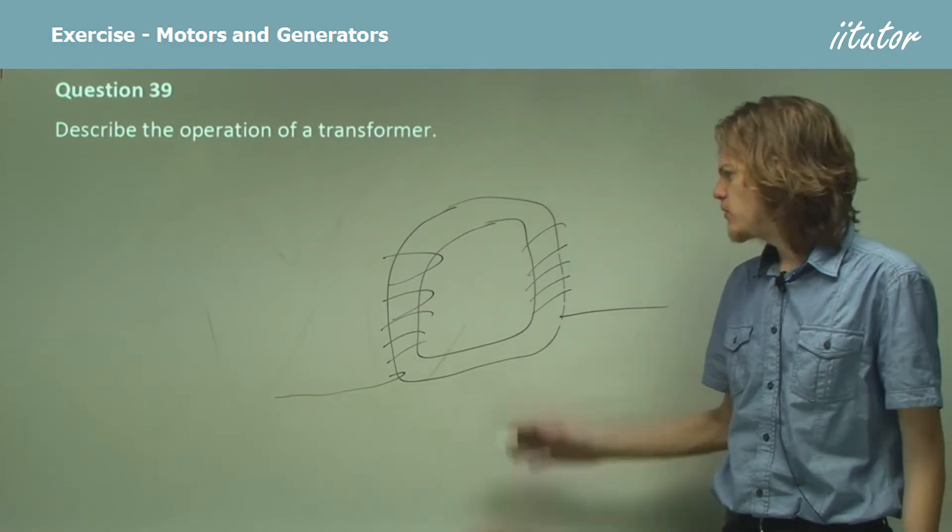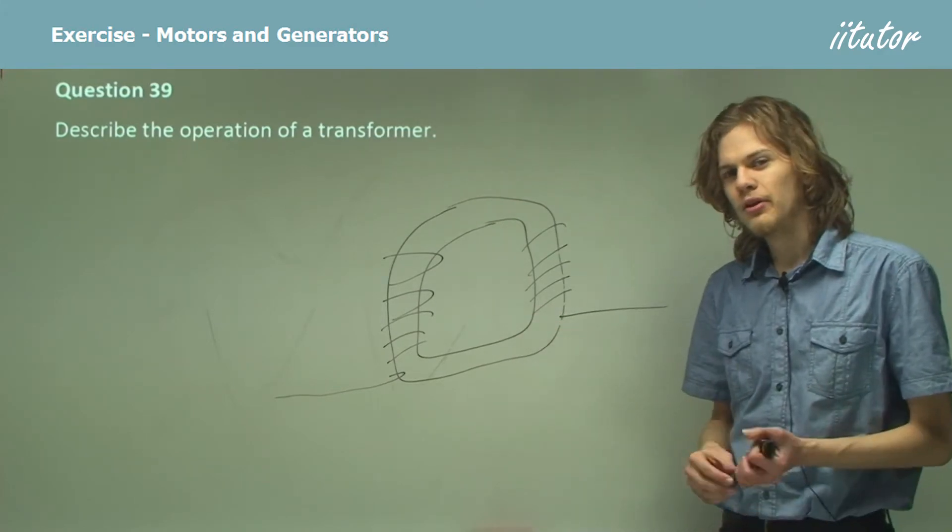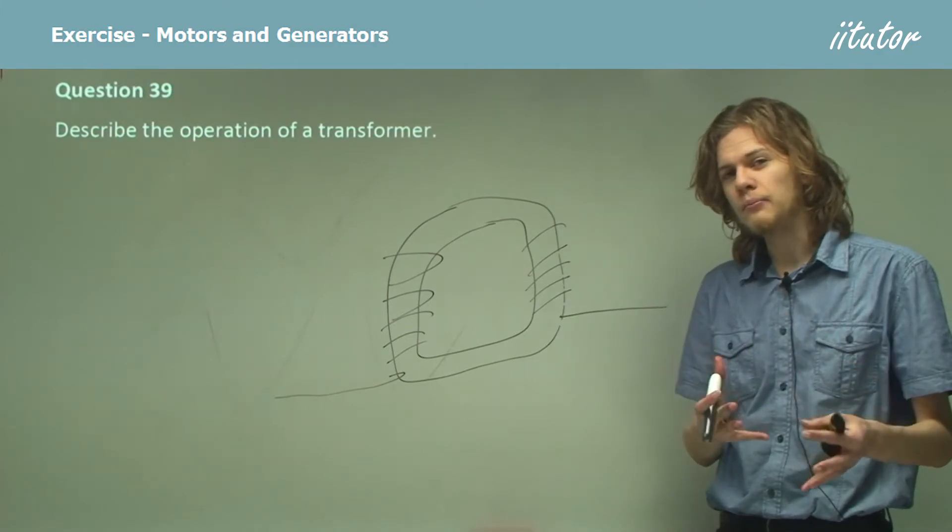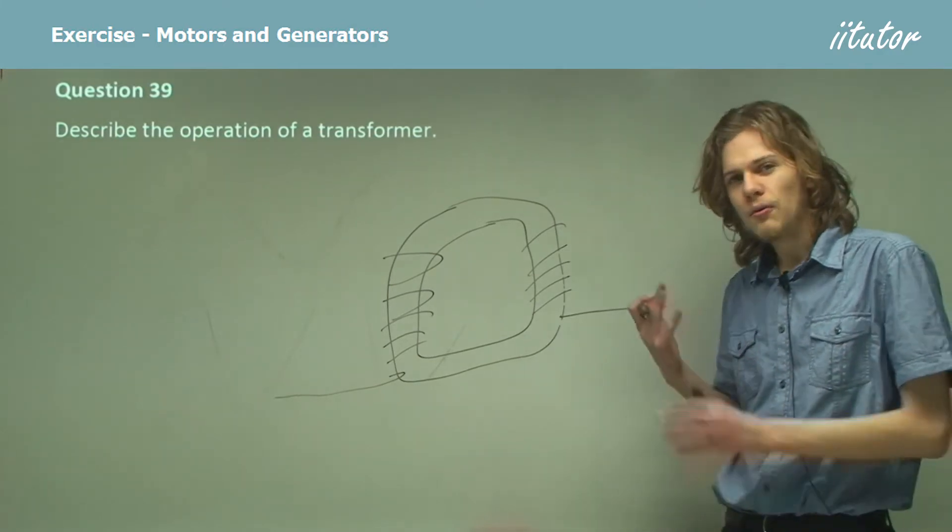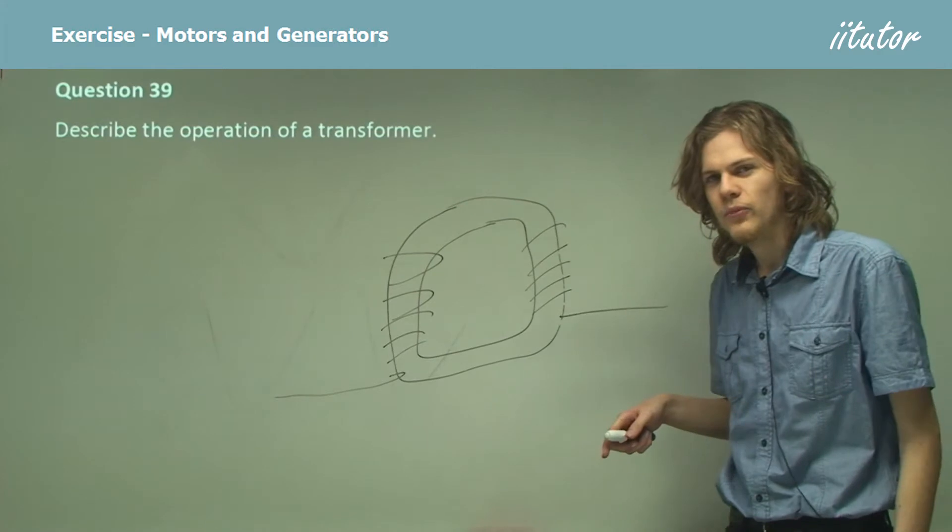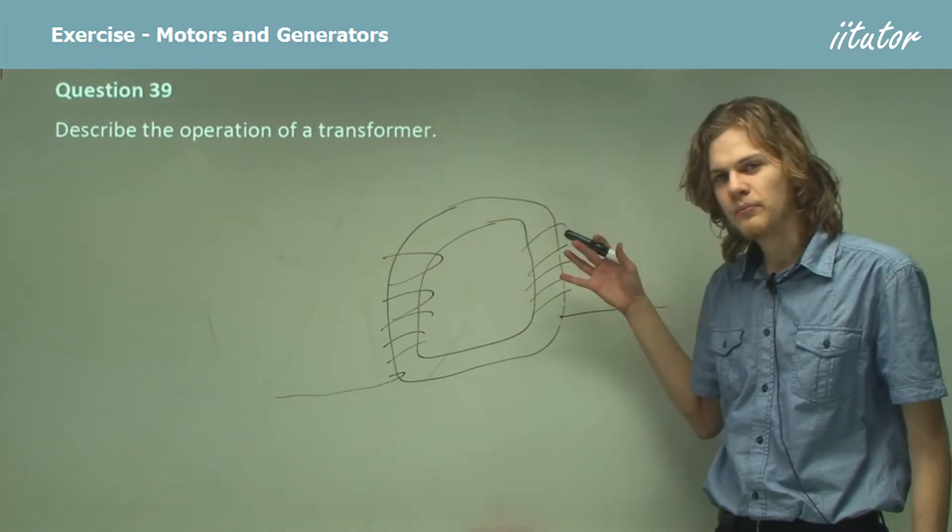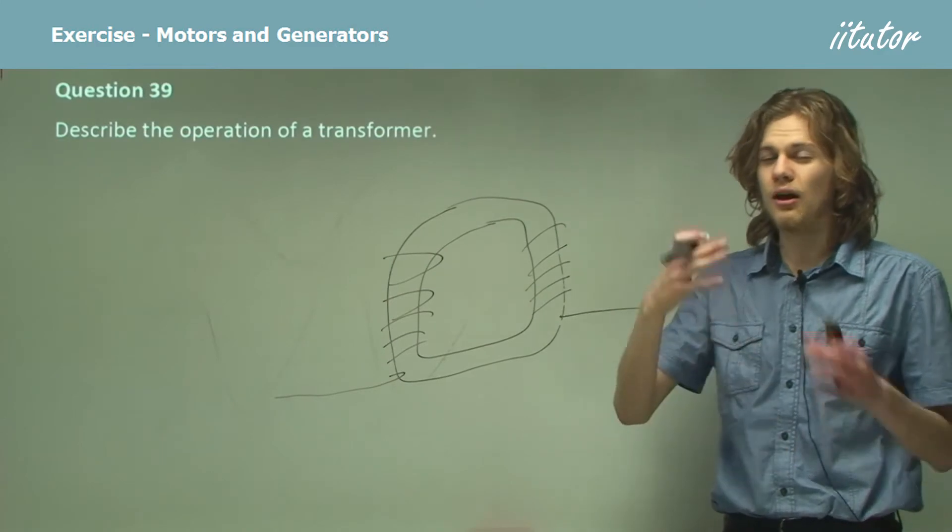As it turns out, this isn't the only way to construct a transformer. All we need is for an induced magnetic field in one to induce a current in the other. So we can in fact put one coil inside the other and maybe even put an iron bar inside that.